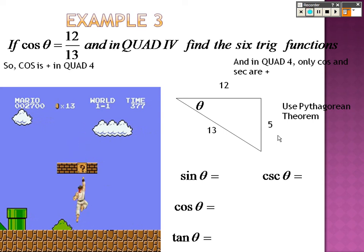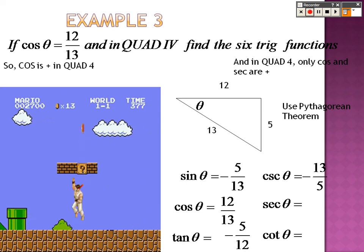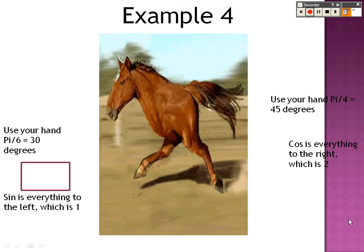We have all of these, and in quadrant 4, cosine and secant are all that's positive. Cosine is 12 over 13, so secant is 13 over 12. Sine is opposite over hypotenuse, which is 5 over 13, but it's negative, so it's negative 5 over 13. Tangent is opposite over adjacent, which is 5 over 12, but 5 over 12 is going to be negative. Cosine and secant are the only positive items. So to find the reciprocals, you just flip them.